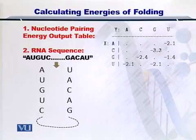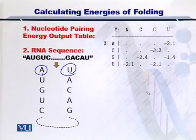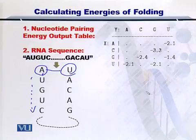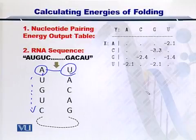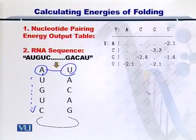Here we can easily form bonds between the complementary nucleotides A and U, and so on and so forth. Upon the formation of each bond, energy will be continuously given out and we will try to accumulate all the energy that is given out and see the net energy that is given out.